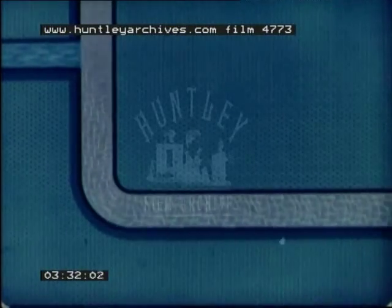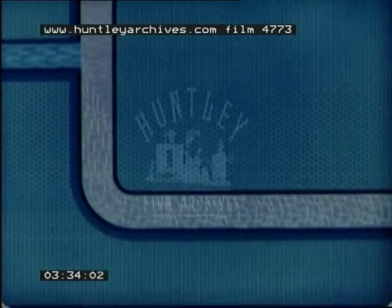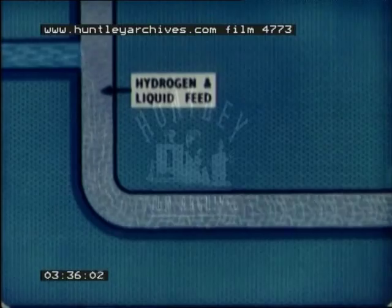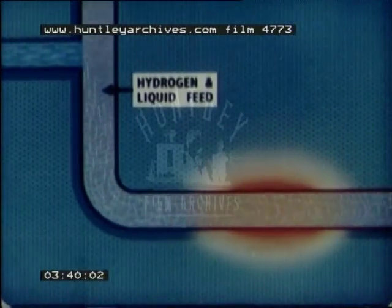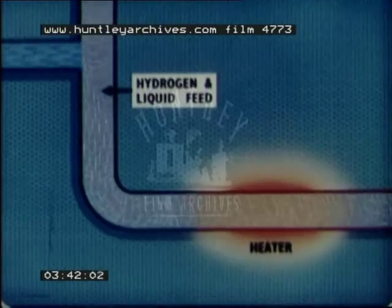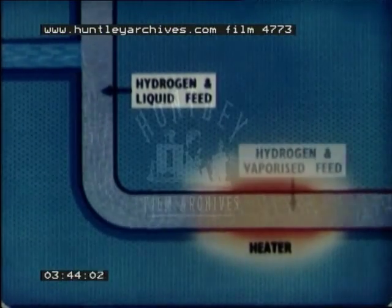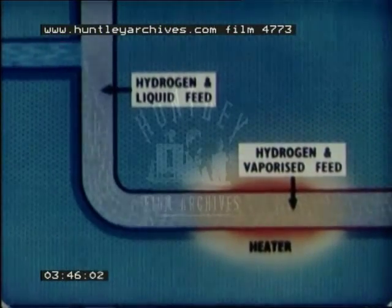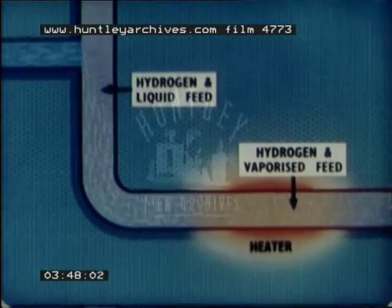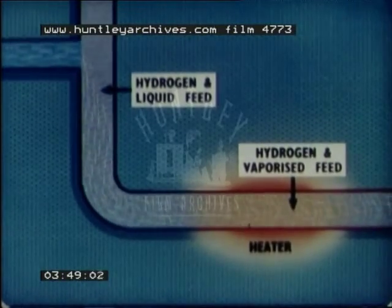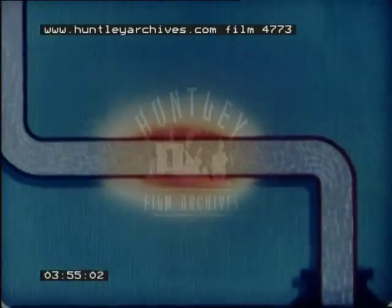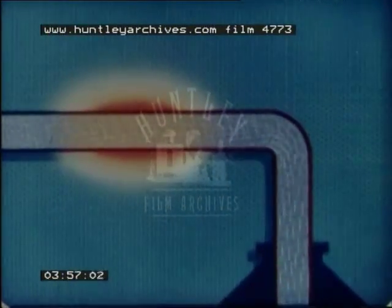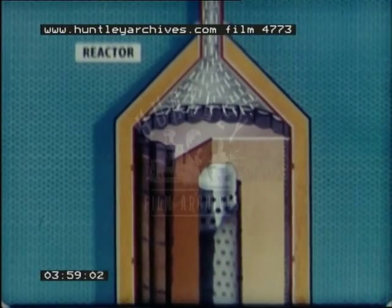The feedstock is atomized to fine droplets as it enters the hydrogen stream. It is then heated to vaporize the oil completely. This mixes the hydrocarbon molecules intimately with the hydrogen. The temperature may now be as high as a thousand degrees Fahrenheit, and the fully vaporized feed enters a reactor.